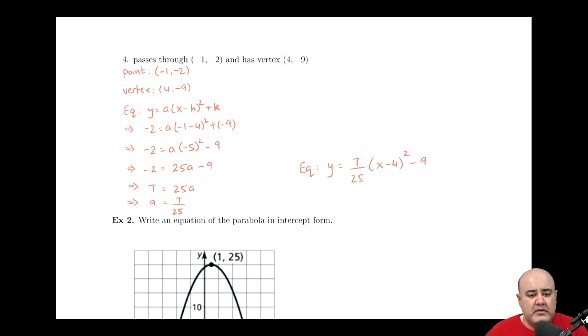In this example, we're given that the function passes through the point negative 1, negative 2, and also that the vertex is 4, negative 9. So again, we list our ingredients. The point is negative 1, negative 2, and the vertex is 4, negative 9.